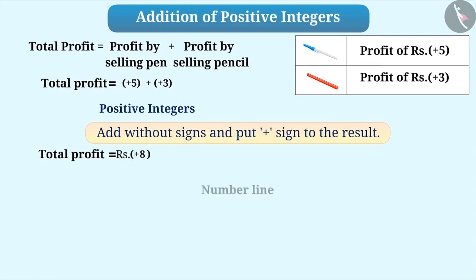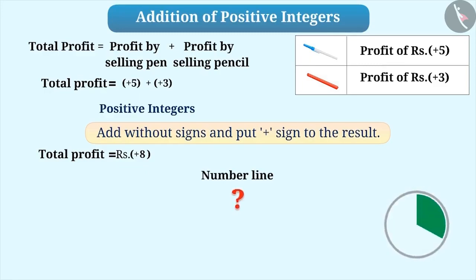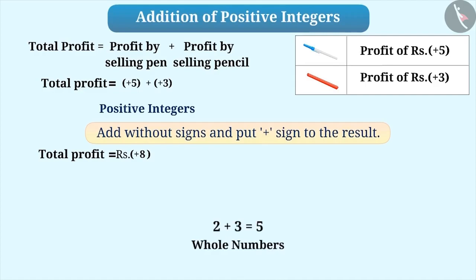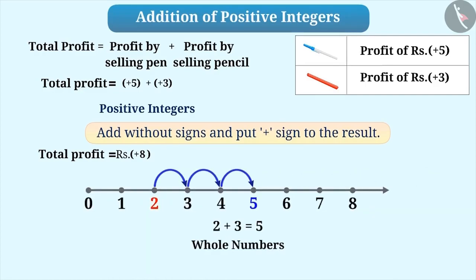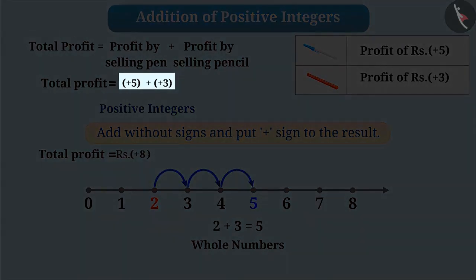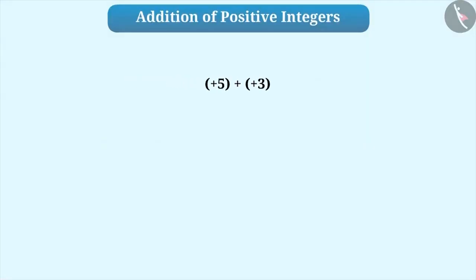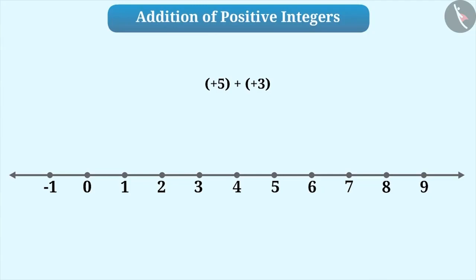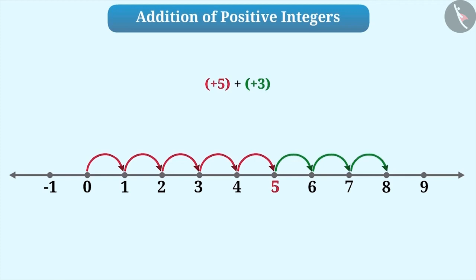Can we use the number line for addition of integers? Think about it. The addition of whole numbers can be represented on the number line. Similarly, the addition of integers can also be represented on the number line. We will understand it with the example of plus 5 plus plus 3. For addition, first of all, draw a number line of integers. Here, plus 5 is the first integer. Since it is a positive integer, we move 5 places to the right of 0 and we reach plus 5. Now the second integer is plus 3. Since it is also a positive integer, we move 3 places to the right of plus 5 and we reach plus 8, which is the result of plus 5 plus plus 3.